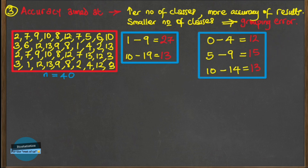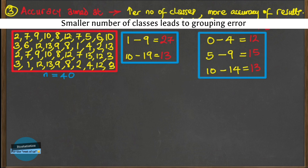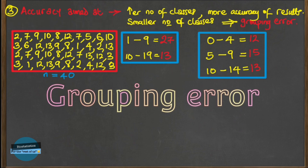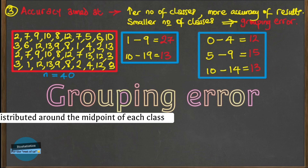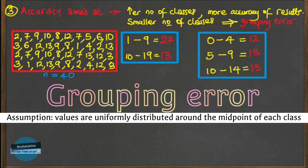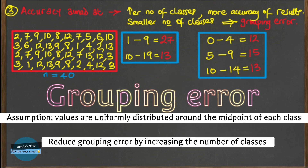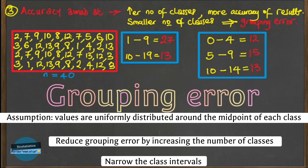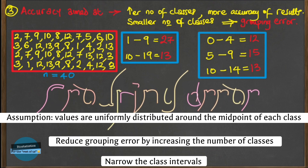A smaller number of classes gives a less accurate representation and leads to what statisticians call grouping error. Grouping error is the error introduced into statistical data when data is grouped into classes. Grouping assumes a uniform distribution of data values around the midpoint of each class, and this assumption may not always be true. Grouping error can be reduced by increasing the number of groups, which will narrow the class intervals.